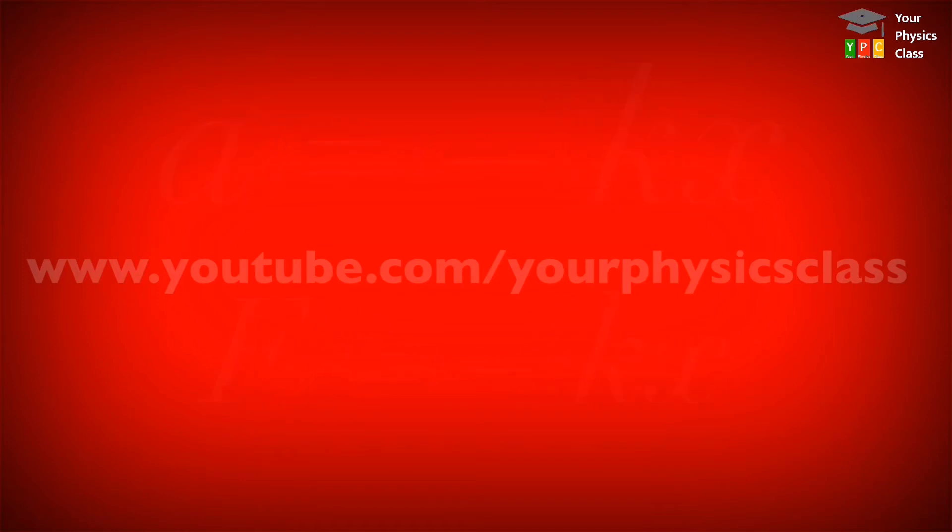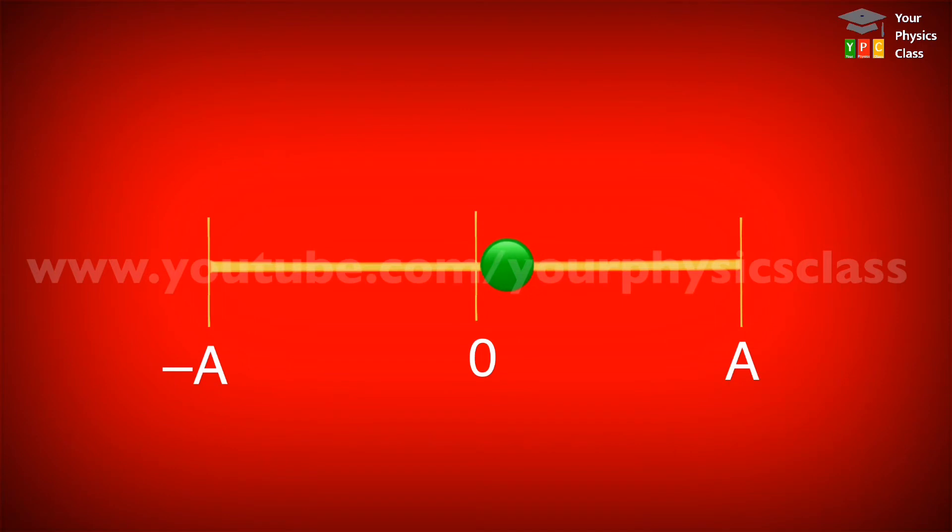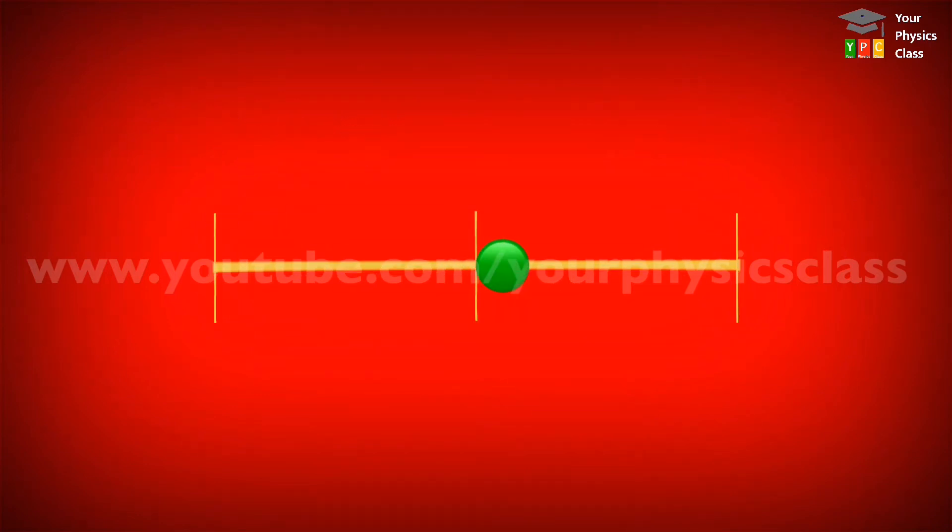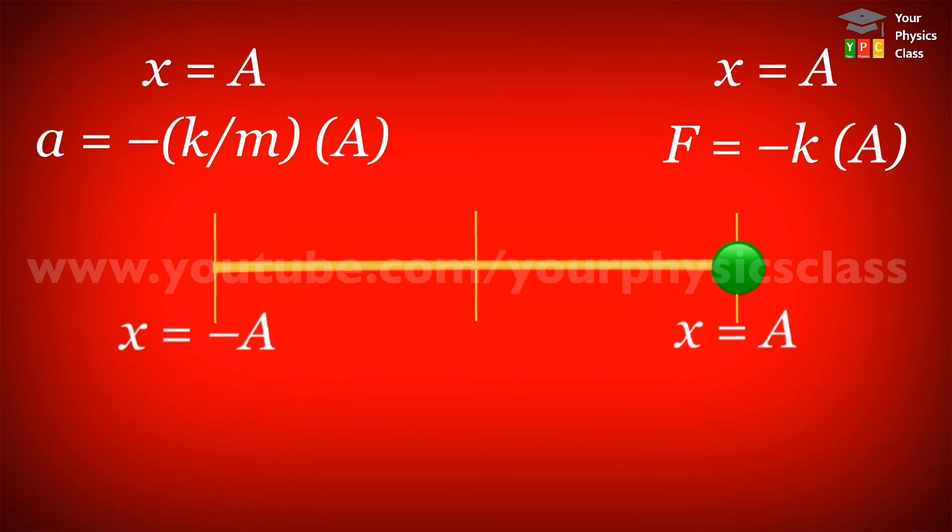Matlab, displacement jada to acceleration aur force bhi jada. Or displacement kam to acceleration aur force bhi kam. At mean position, x equals 0. Therefore, acceleration and force both would be 0. At extreme position, x is equal to amplitude shown by a or minus a. If we consider plus a here, then acceleration and force both would be maximum.